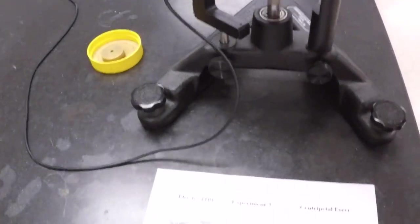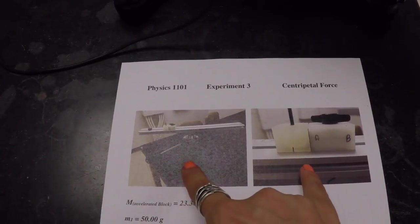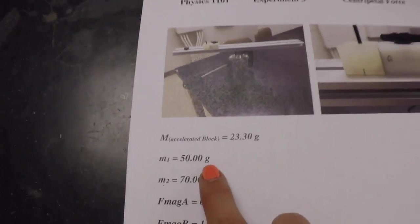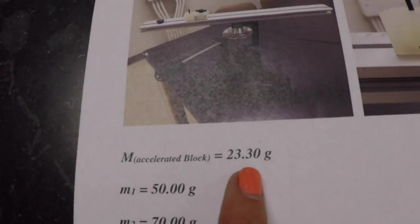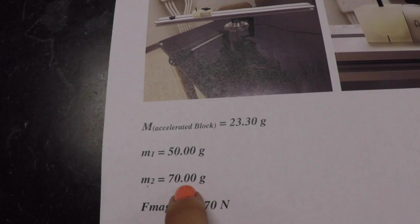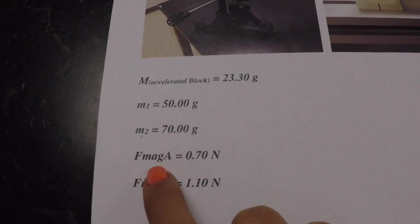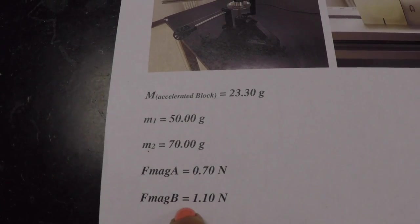Okay, lastly on the table you have the information sheet with a couple of pictures of how your setup looks like. Then you are given the mass of the accelerated block. You're given mass m1 and m2 that you will add to the accelerating block, and then you're given values for the A side of the magnet and B side of the magnet.